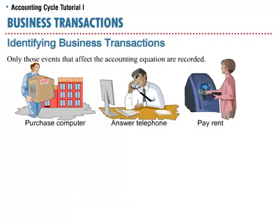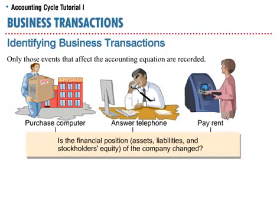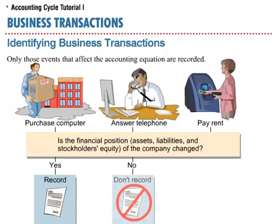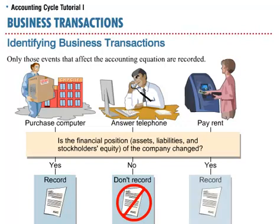Let's determine whether each of the following events is a business transaction. The company purchases a computer — is the financial position of the company changed? Yes, therefore it is recorded. An employee answers a telephone — is the financial position changed? No, therefore it is not recorded. The company pays rent — is the financial position changed? Yes, therefore it is recorded.